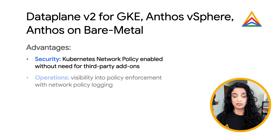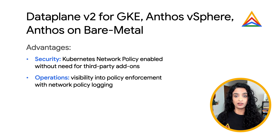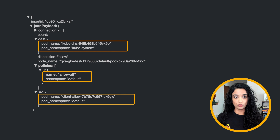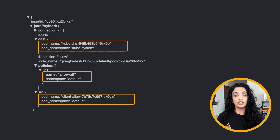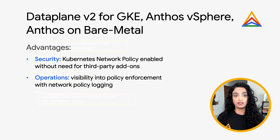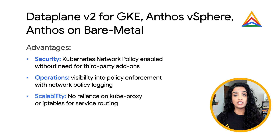DataPlane v2 brings several advantages to your deployments. From a security and operations perspective, you have native Kubernetes network policy and logging without the need for a third-party add-on. Network policy logging lets you monitor how your policies are enforcing traffic, so you can see allowed and denied network connections in the Cloud Logging console to audit and troubleshoot policies. DataPlane v2 also lends well to large environments for scale, without the need for a queue proxy nor IP tables for service routing.